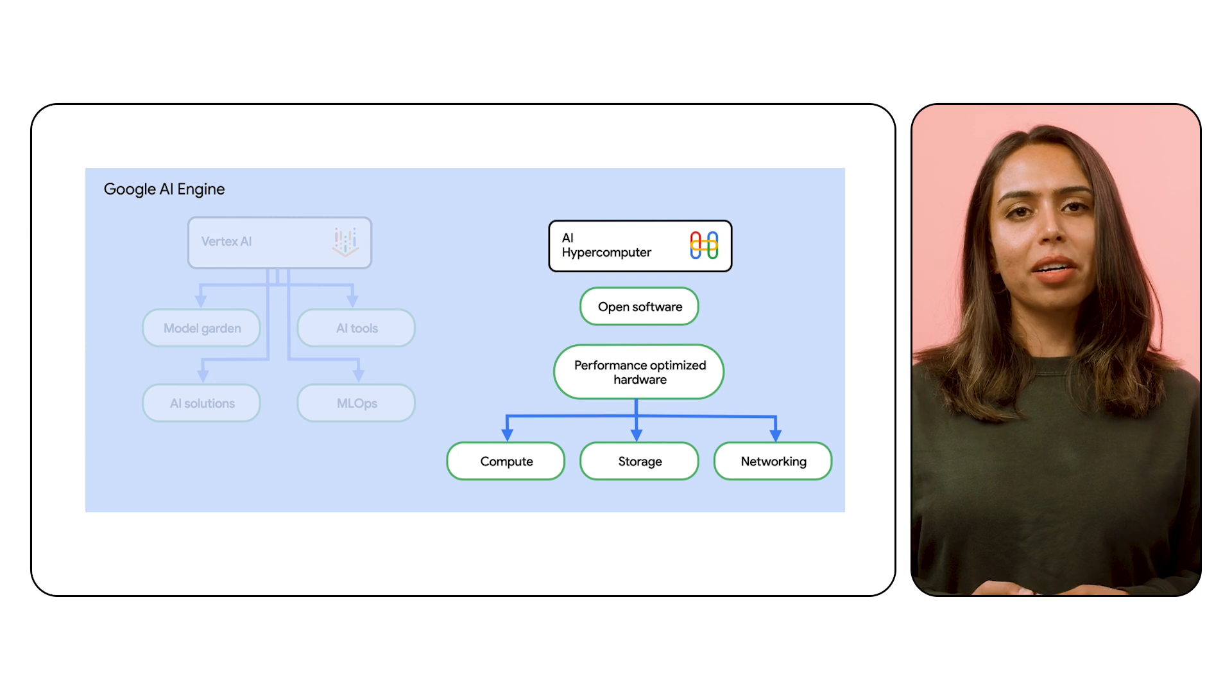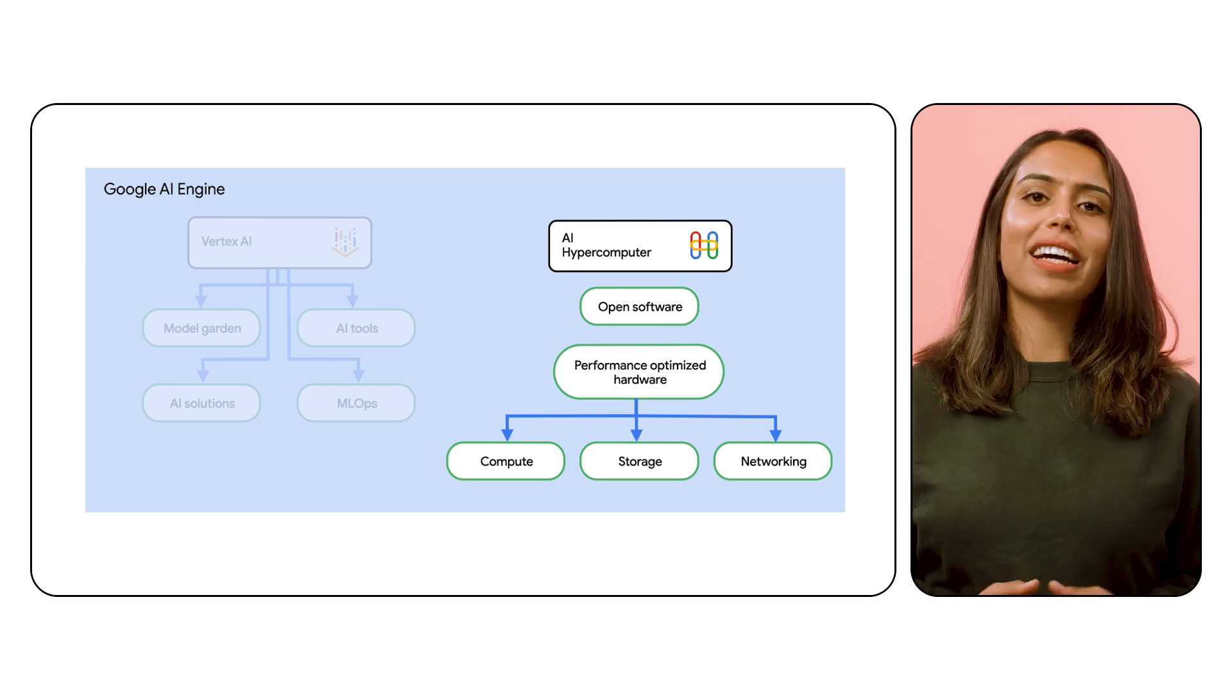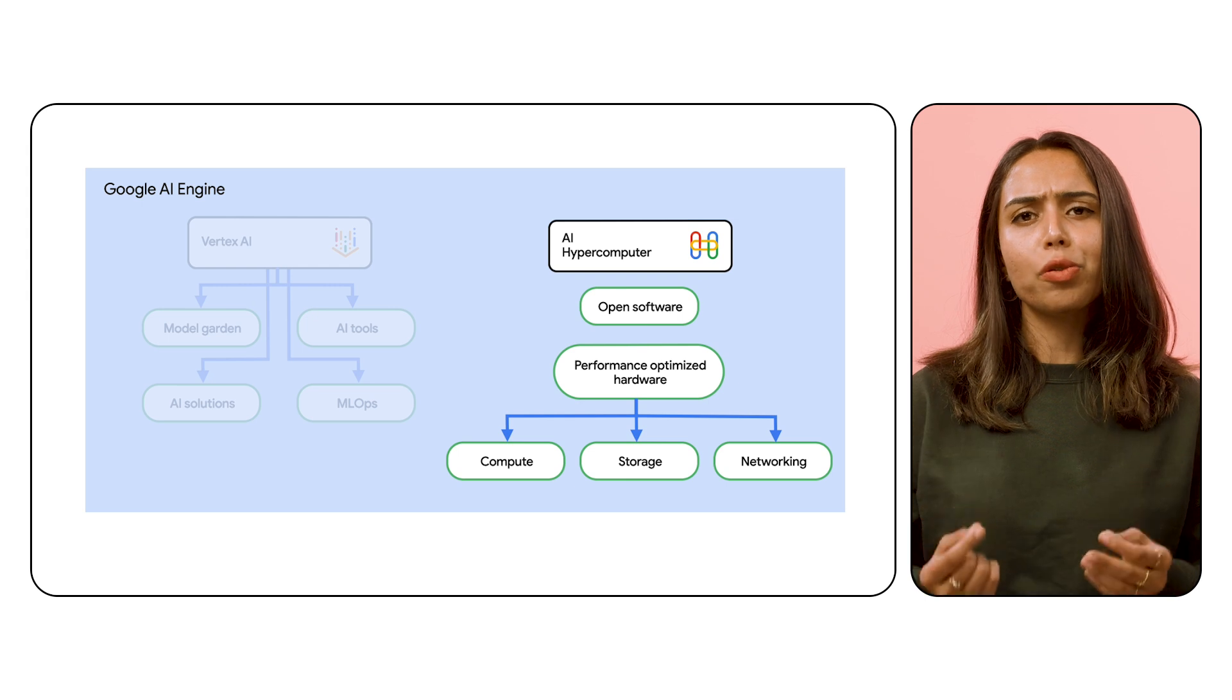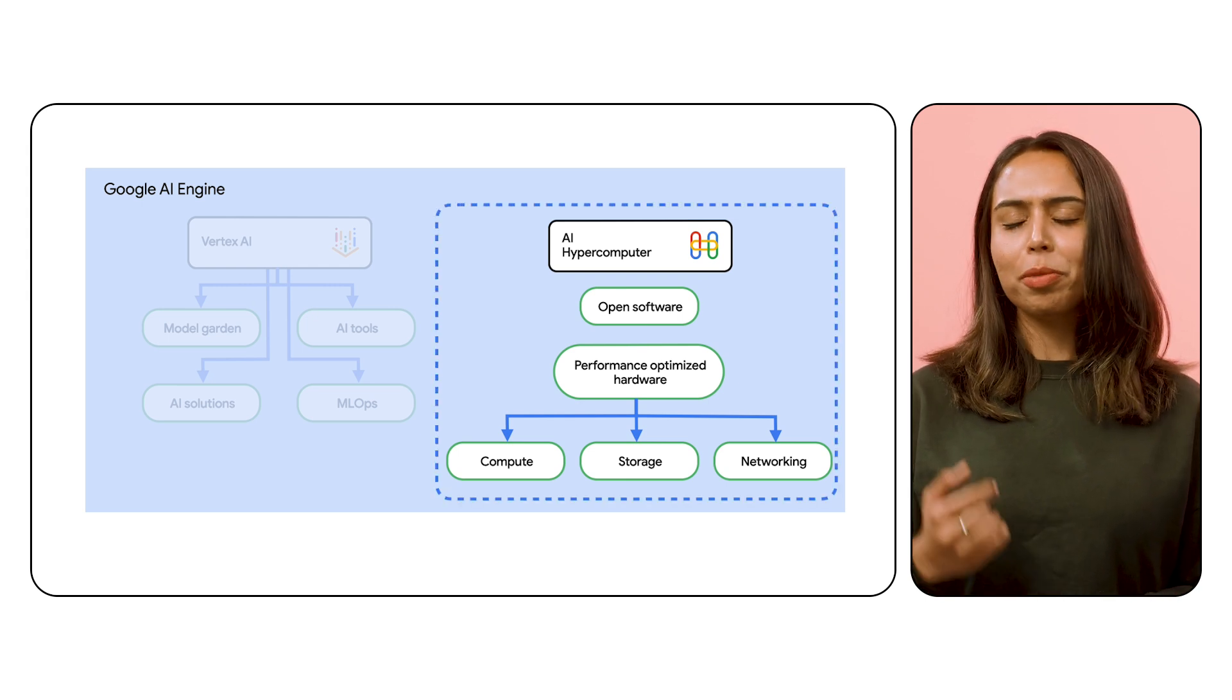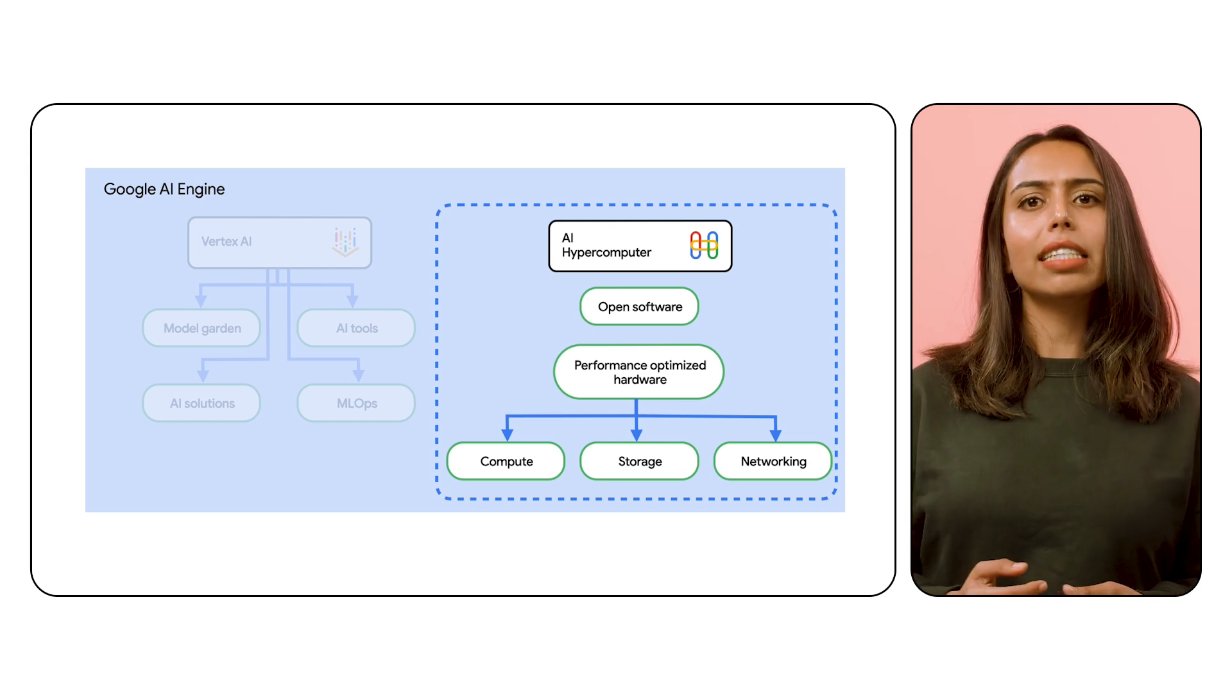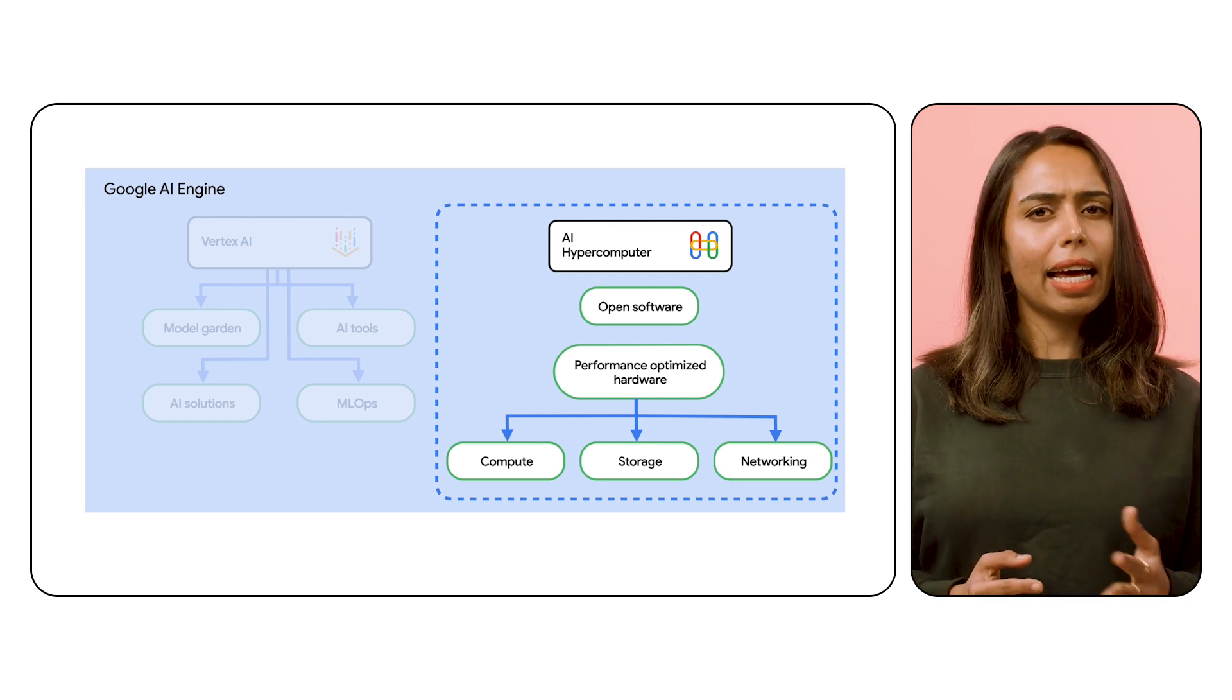Finally, the model builder. You are pushing the boundaries of AI, training and serving custom models from scratch. For you, it's all about performance, scalability, and having that granular control over your AI infrastructure. That's where Google's AI hypercomputer shines. It's a full stack of AI-optimized hardware, software, and consumption options working together to improve AI workload performance, scalability, and cost efficiency.